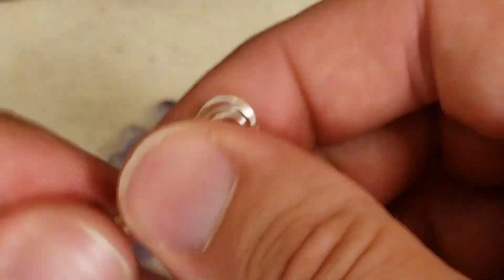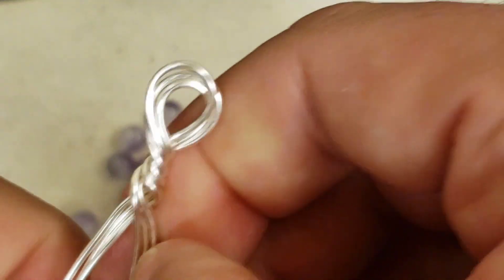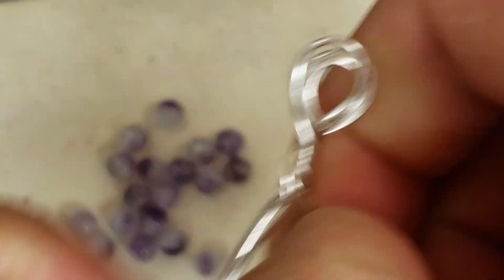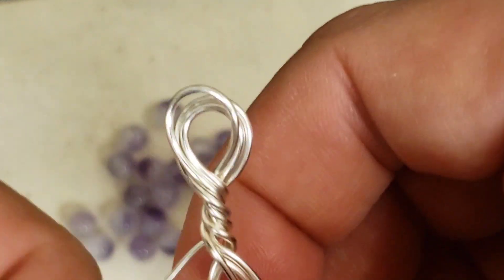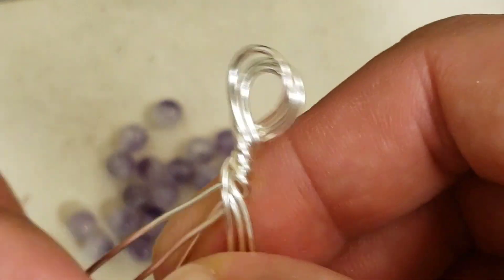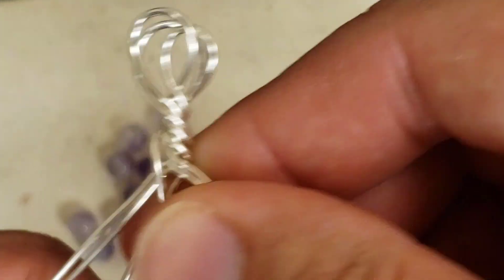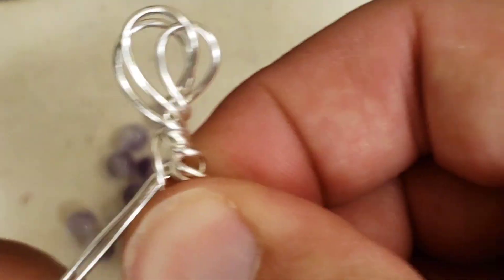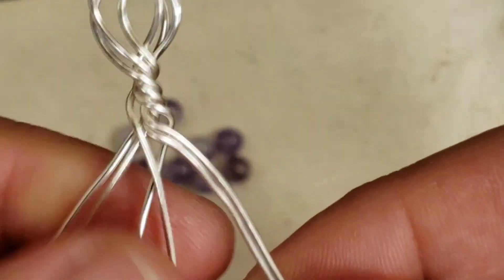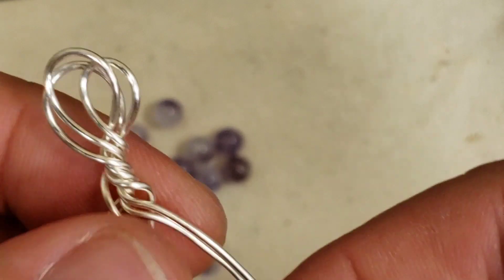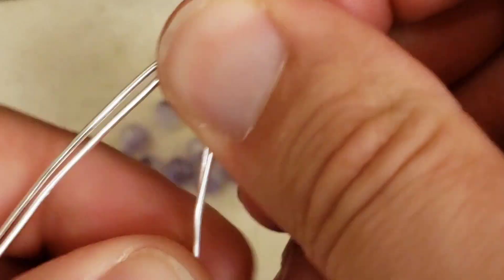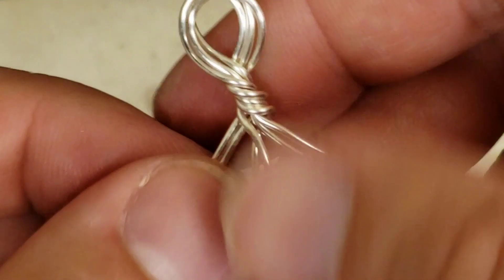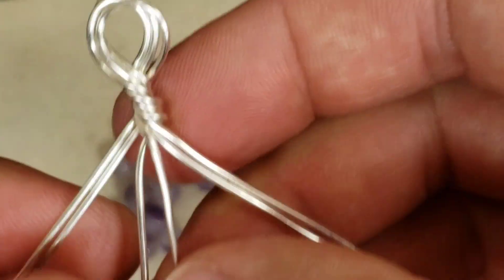Then flatten all these guys out and separate them into 3 sets of 2 strands. Just kind of find where they fall and then separate them into 2 strands, 2 strands, and 2 strands like that. You can stretch out, smooth out the wire as much as you want, but don't go too crazy.